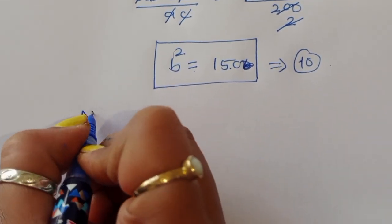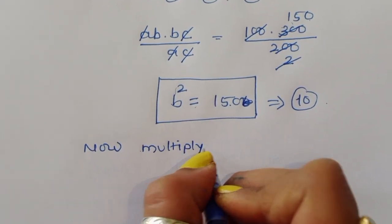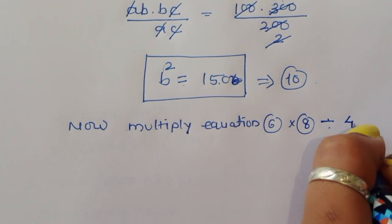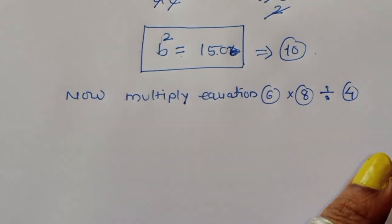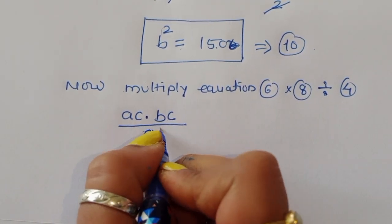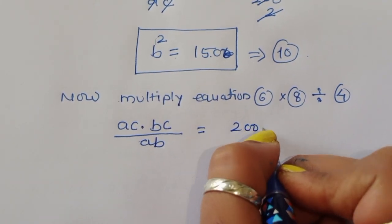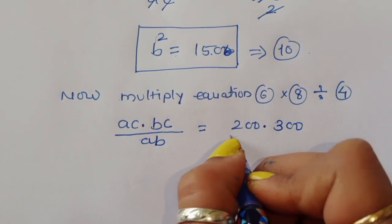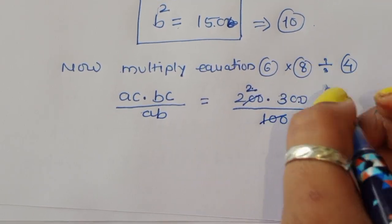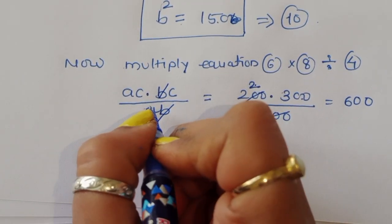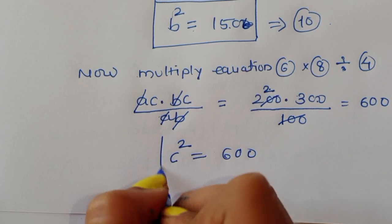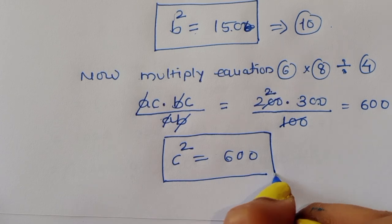Now multiply equation 6 times equation 8 divided by equation 4: (AC × BC) / AB = (200 × 300) / 100 = 600. The A and B cancel, leaving C² equal to 600. This is equation 11.